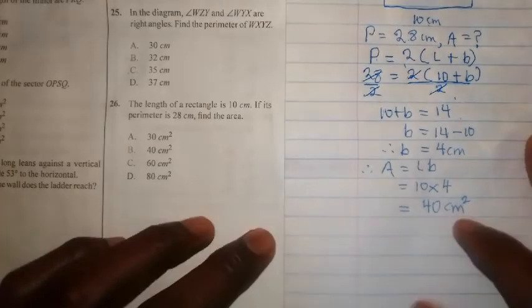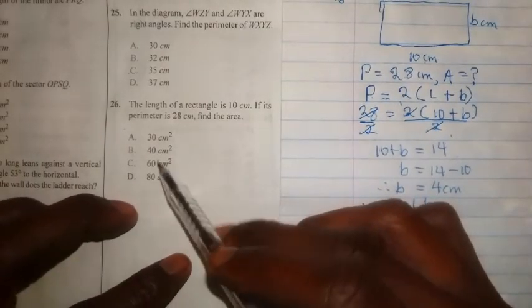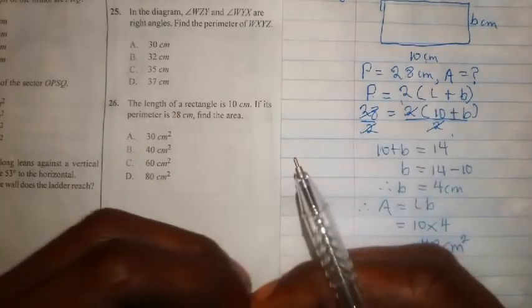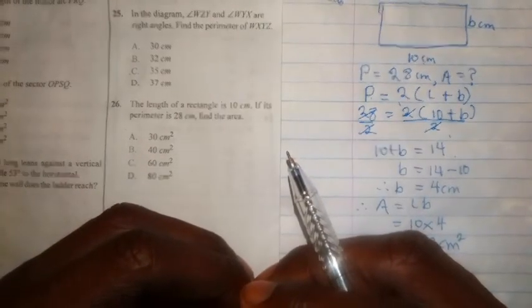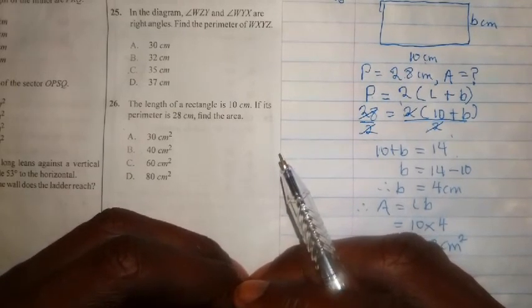So there you have it, that is the answer to this question. If you come to the options, you will see that the correct option is option B. I hope you enjoyed this lesson. Stay tuned as I'll be bringing you solutions to more WASSCE 2022 mathematics questions.